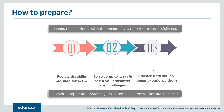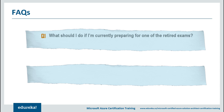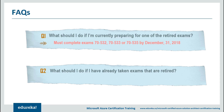That covers AZ-300, the Microsoft Azure Architect Technologies exam. Currently there's confusion about courses that are going to be retired. The most frequently asked question is: what should I do if I'm preparing for a retiring exam? If you're preparing for exams like 70-532, 70-533, or 70-535, you must complete them by December 31, 2018, as they are being retired. If you've already taken a retired exam and want to upgrade your skill level to job-role-based certifications, you just need to take transition exams instead.